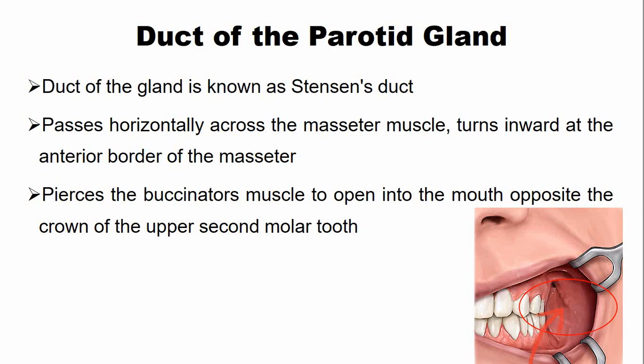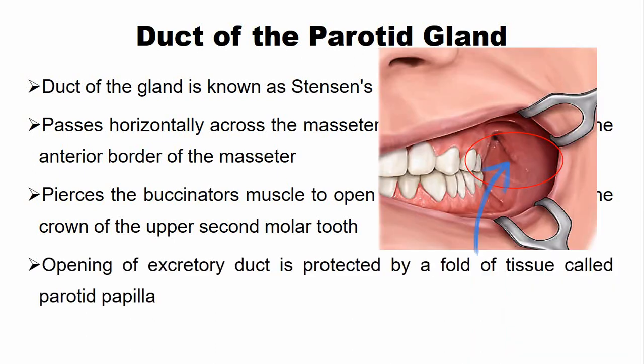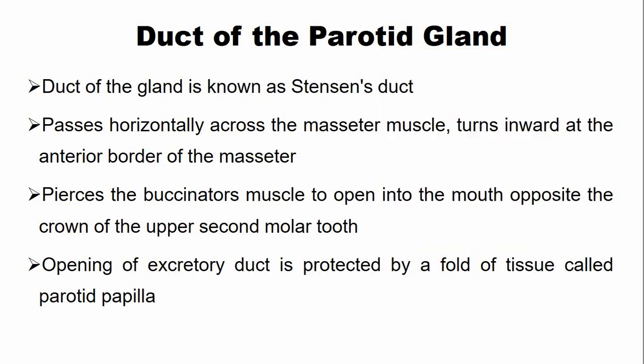The opening of the excretory duct is protected by a fold of tissue known as the parotid papilla. Sometimes patients are confused because the parotid papilla can be larger in size and they think it is a pathology, but actually it is a normal landmark present in the oral cavity.